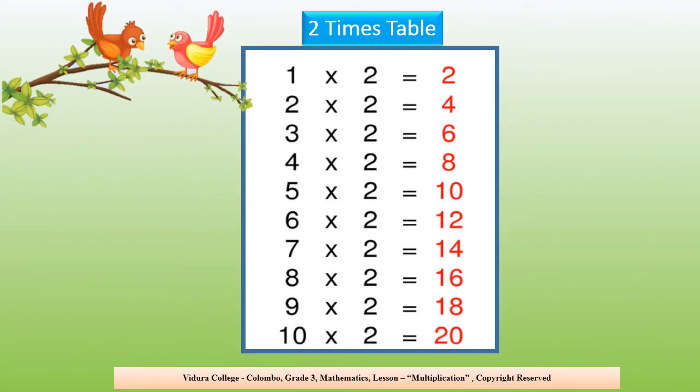Here you can see the 2 times table. Shall we read it children? Ok. 1 times 2 is 2. 2 times 2 is 4. 3 times 2 is 6. 4 times 2 is 8. 5 times 2 is 10. 6 times 2 is 12. 7 times 2 is 14. 8 times 2 is 16. 9 times 2 is 18. 10 times 2 is 20.